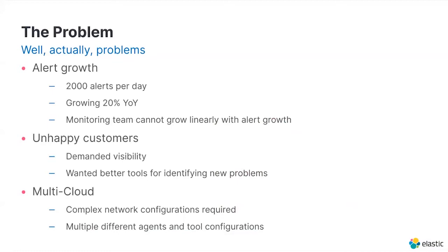Number one issue has been our alert growth. We've seen an average of about 2,000 alerts a day recently, and that's growing at about 20% year over year, so it's continuously scaling up. Our monitoring team really can't just continue to grow linearly to deal with that alert growth, because there's a fair amount of manual work involved anytime one of those comes in, and it just doesn't scale.